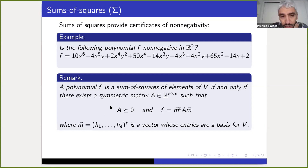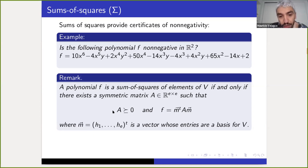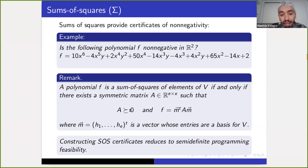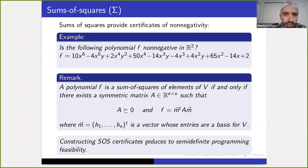A polynomial f is a sum of squares of elements in a vector space V of polynomials of dimension E if and only if there exists an E by E symmetric positive semi-definite matrix A such that f equals M^T A M, where M is a vector whose entries are a basis for V. Constructing SOS certificates reduces to semi-definite programming feasibility, while optimizing over the cone of sums of squares is an instance of semi-definite programming — things we can do in polynomial time. So P matters because we can formulate optimization problems with it, and Sigma matters because we can solve them.